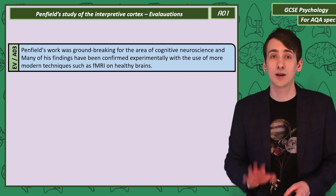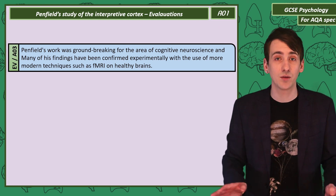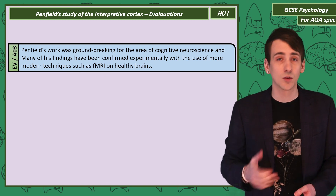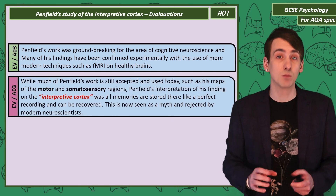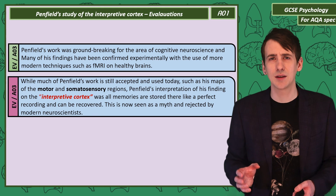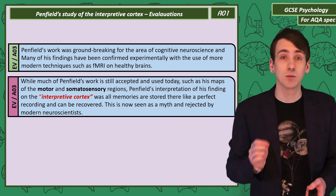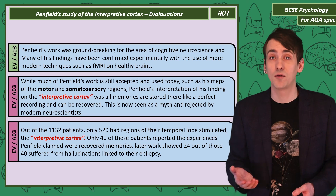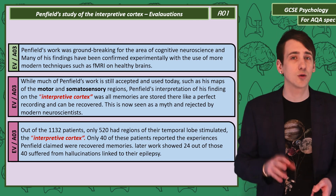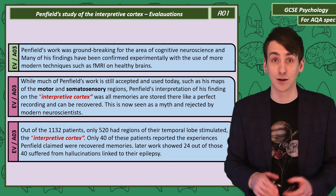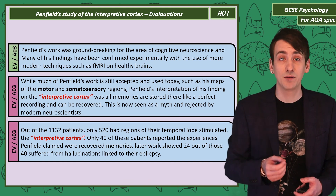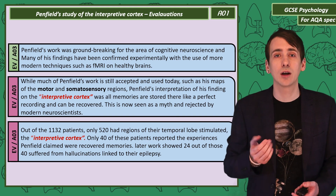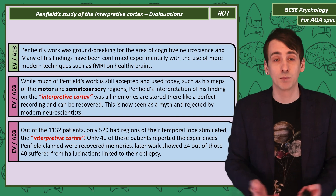Evaluating Penfield's work, we can agree it was groundbreaking for cognitive neuroscience. Many of his findings from brain surgery were confirmed years later with modern brain scanning techniques like fMRI. While much of his work has been confirmed — like his maps of the motor and somatosensory cortex — his suggestion that the interpretive cortex contains a perfect recording of a memory that can be fully recovered is seen as a myth. Of his 1,132 patients, only 520 had their temporal lobe stimulated, and of those, only 40 reported experiences Penfield claimed were recovered memories. Later research showed 24 of those 40 patients were suffering hallucinations linked to epilepsy — not exactly reliable evidence.